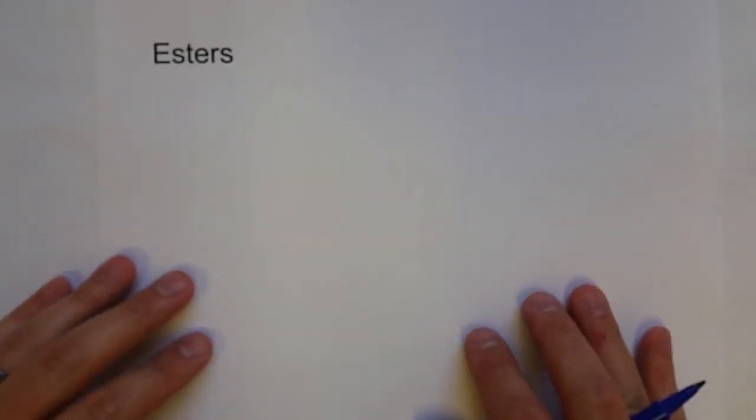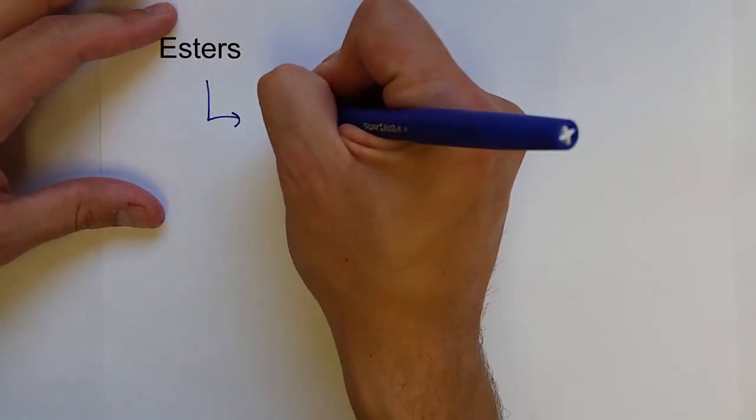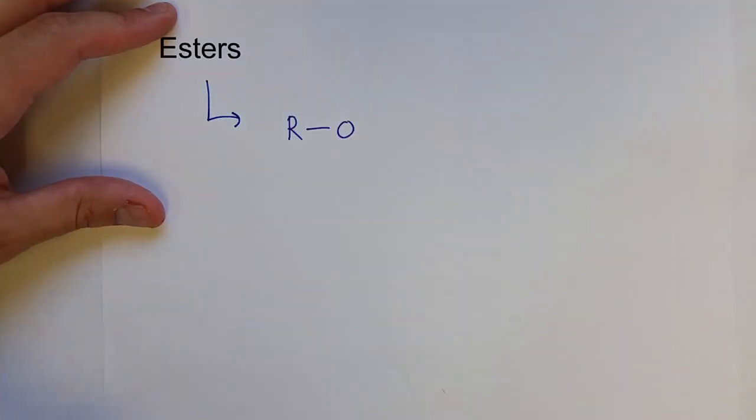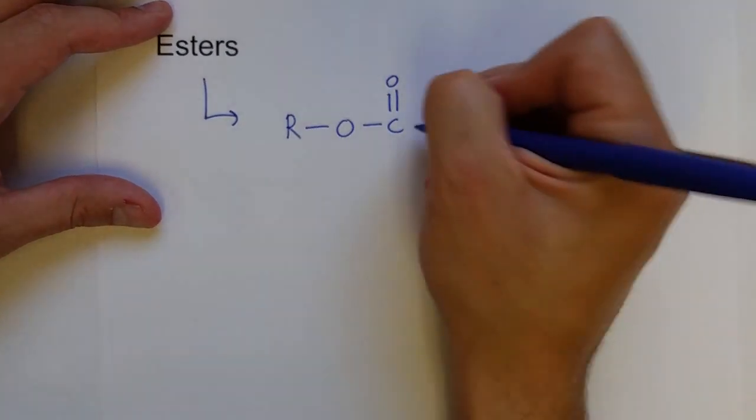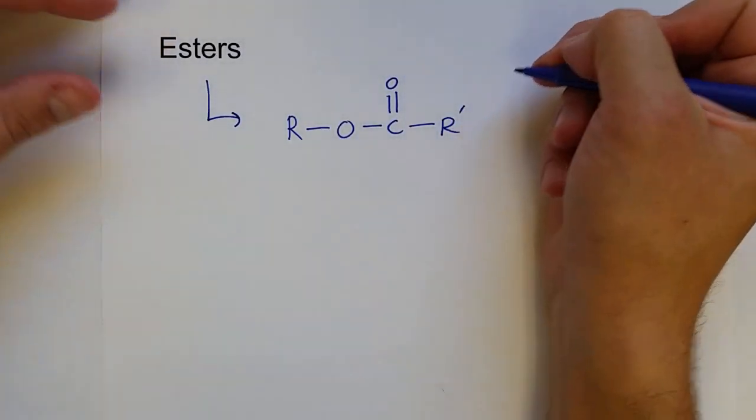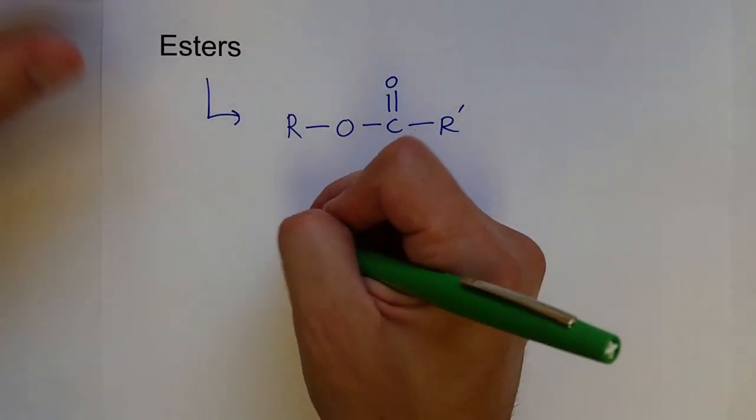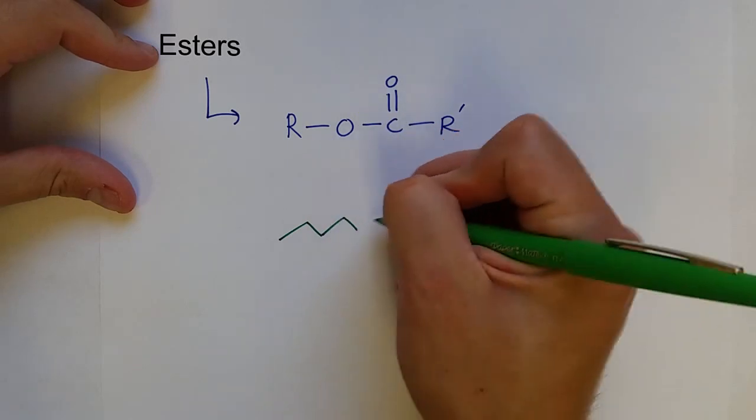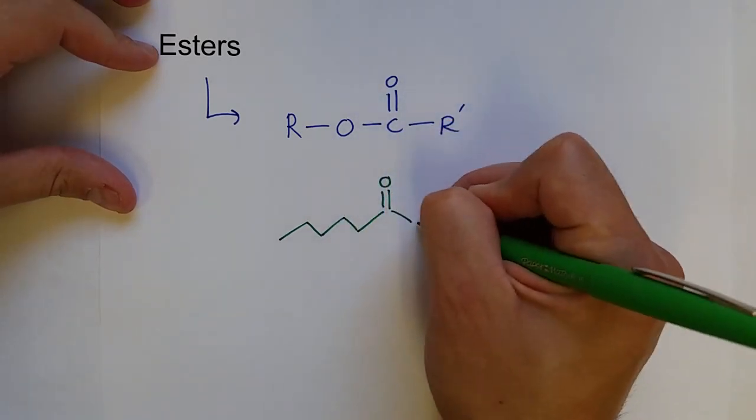An ester would take this shape where you have a hydrocarbon bonded to an oxygen that is bonded to a carbonyl, and then that can be bonded to another hydrocarbon. That is an ester, and of course they can take on any shape.